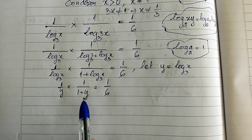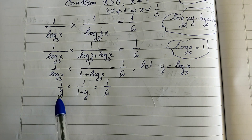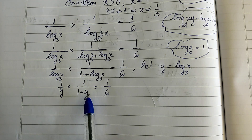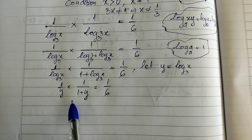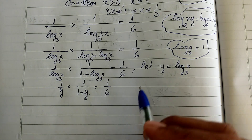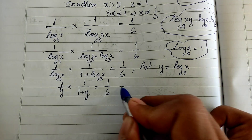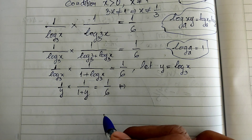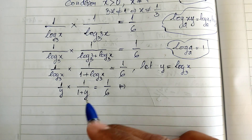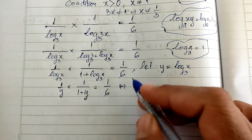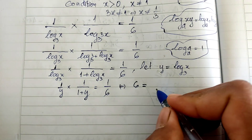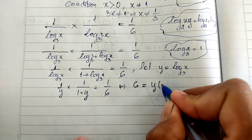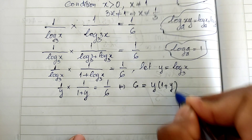Now the LCM of the denominators is 6y multiplied by 1 plus y. I multiply both sides of this equation by 6y times 1 plus y. This gives us 6 is equal to y multiplied by 1 plus y.